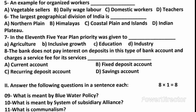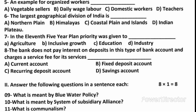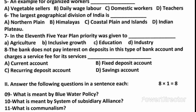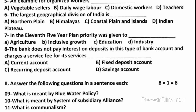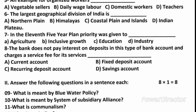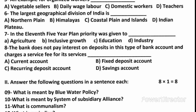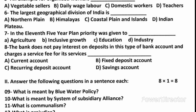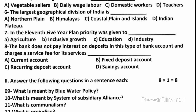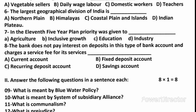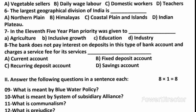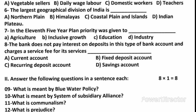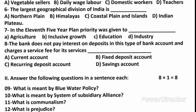Question 10: What is meant by system of subsidiary alliance? Answer: The subsidiary alliance was a military treaty between the East India Company and the Indian states.